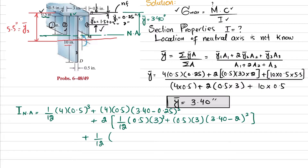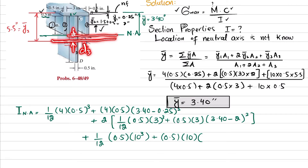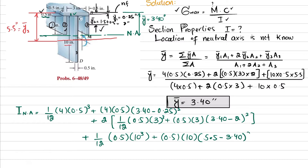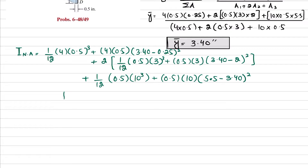For element 3: I3 = (1/12)·0.5·(10)³ + A3·d3². The area A3 = 0.5 × 10, and d3 is the distance from the neutral axis to the mid of element 3: d3 = y3' − ȳ = 5.5 − 3.40, squared. Summing all contributions, the moment of inertia about the neutral axis comes out to be 91.73 in⁴.